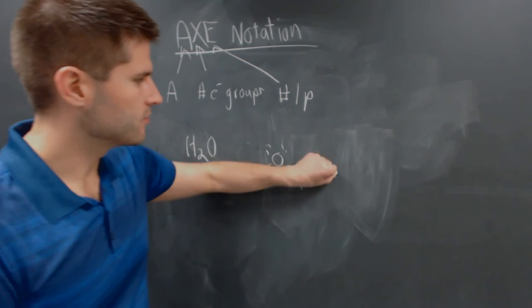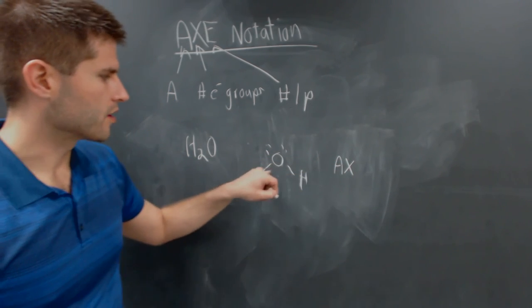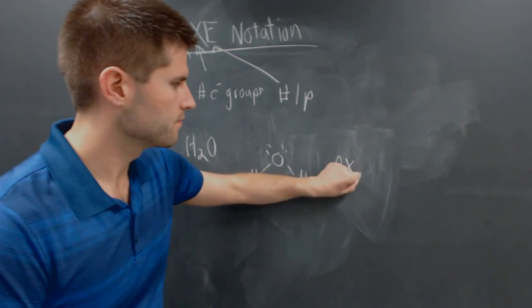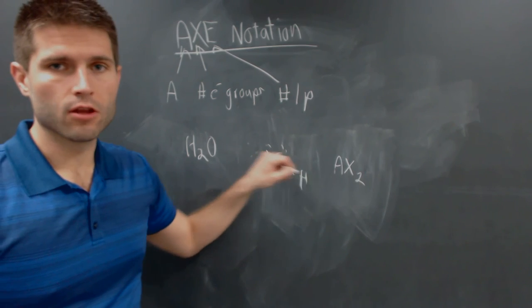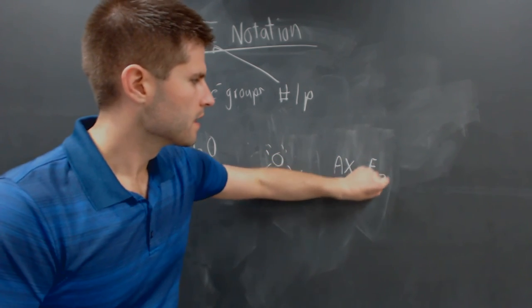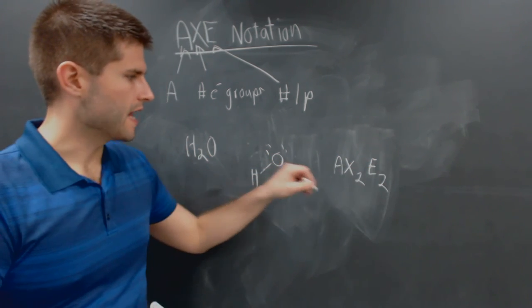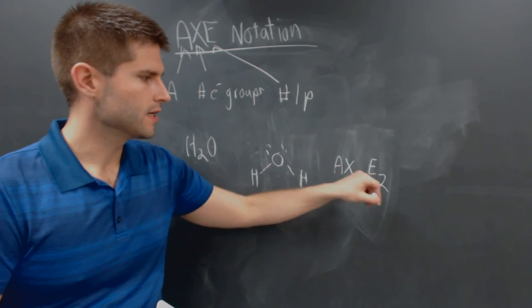So the AXE notation here is going to be an A with an X. There are two bonding groups. There are two sets of lone pairs. So for water, the AXE notation is AX2E2.